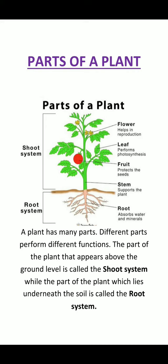Now, the stem. The part of the plant that rises vertically up from the ground is called the stem. The stem of a big tree is called a trunk. It is the stem which holds the plant firmly straight.